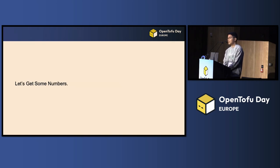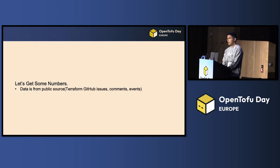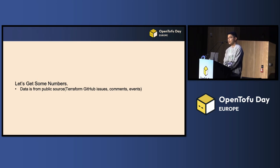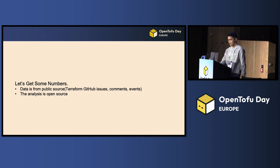How do we do that? Let's look at some numbers — maybe some fun numbers. All are from public sources. For example, we can collect all those Terraform GitHub issues, comments, and events to help us provide some ideas. We mainly focus on the enhancement and proposal issues, and ignore bugs because they are less relevant. The analysis is also open source, so if you are interested in reviewing or reproducing, you can follow the linked repo to take a look.